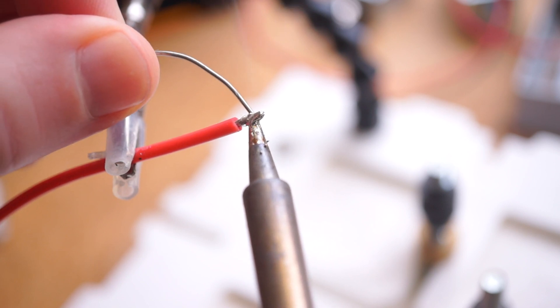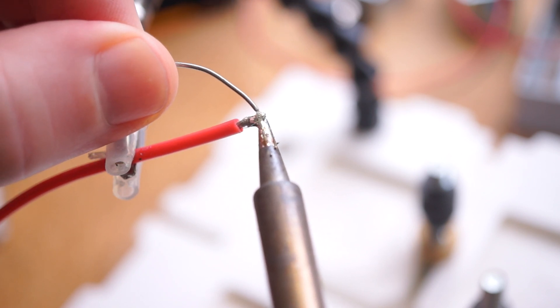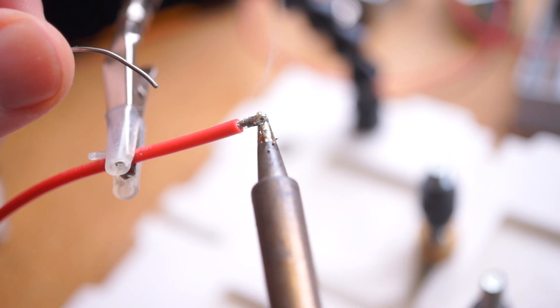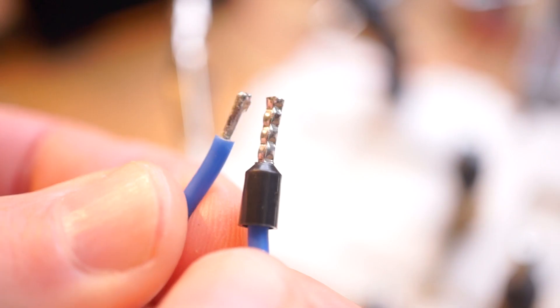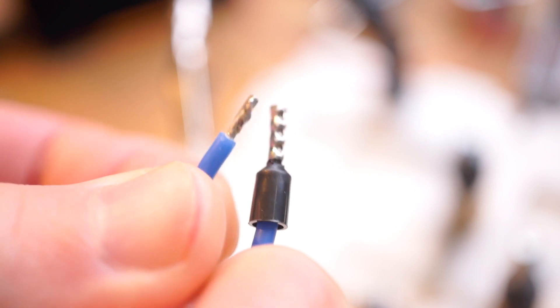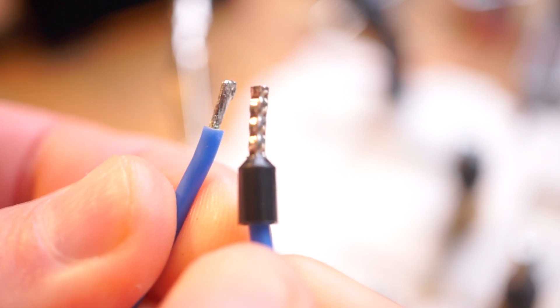You can solve that problem by tinning the end with some solder, but then you're left with a hard, irregular shape at the end of each wire, and these are often harder for the terminal to grip onto, and depending on the shape you're left with, it could rotate out or just vibrate loose over time.